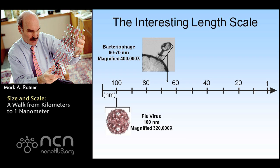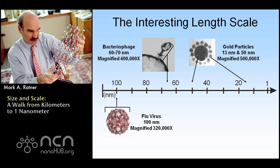Here are some artificial nanoparticles. These particular ones were made at Chad Merkin's lab at Northwestern. You see a large nanoparticle in the middle, which is gold, and small nanoparticles around the outside — also gold. They've been magnified half a million times so that you can see them. They're held together by molecules that you can't see, but these are artificial structures that have been made on this length scale.